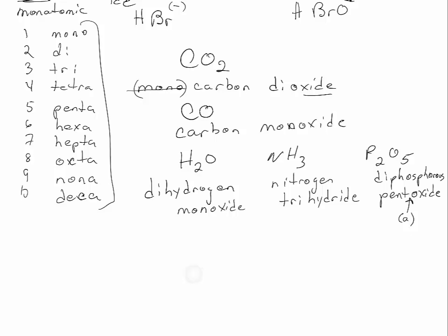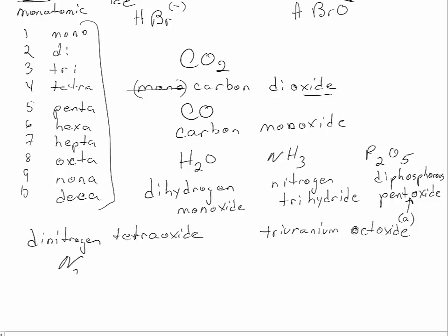So what should the names be for, what should the formulas be for dinitrogen tetraoxide? Again, you might see that with no a. And what should the formula be for triuranium octoxide? So dinitrogen means N2, tetraoxide means O4. Triuranium means U3, octoxide means O8.